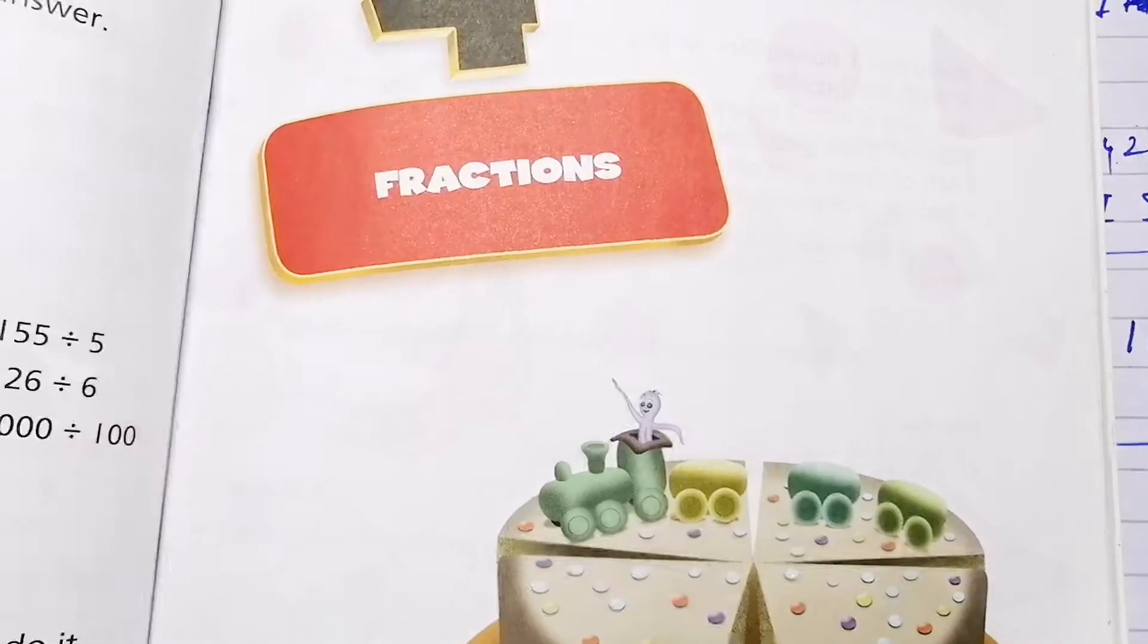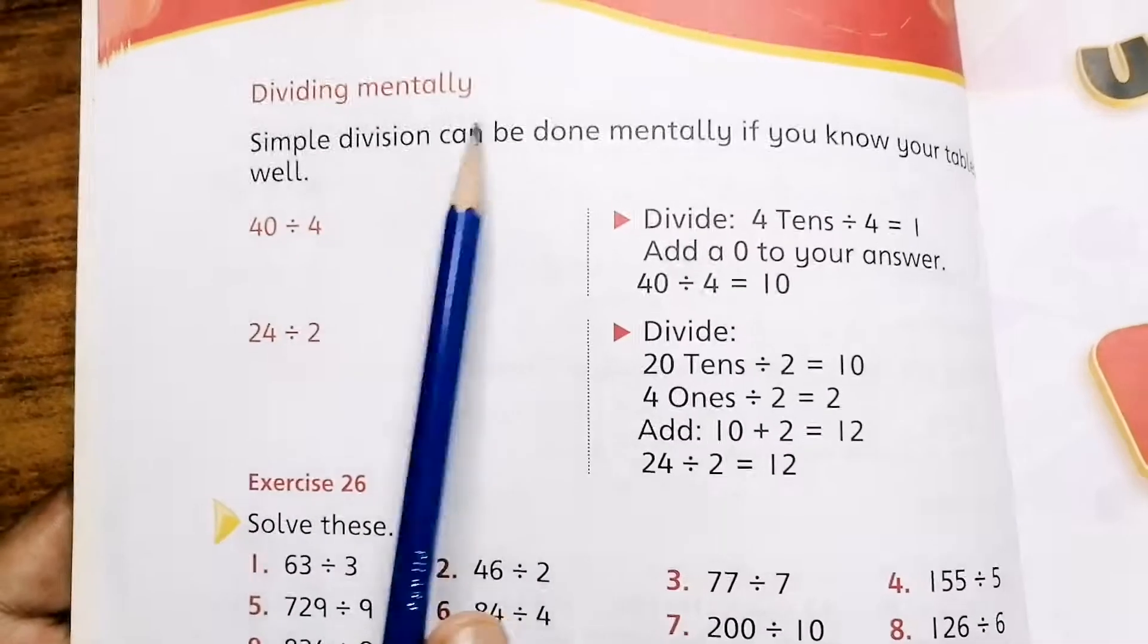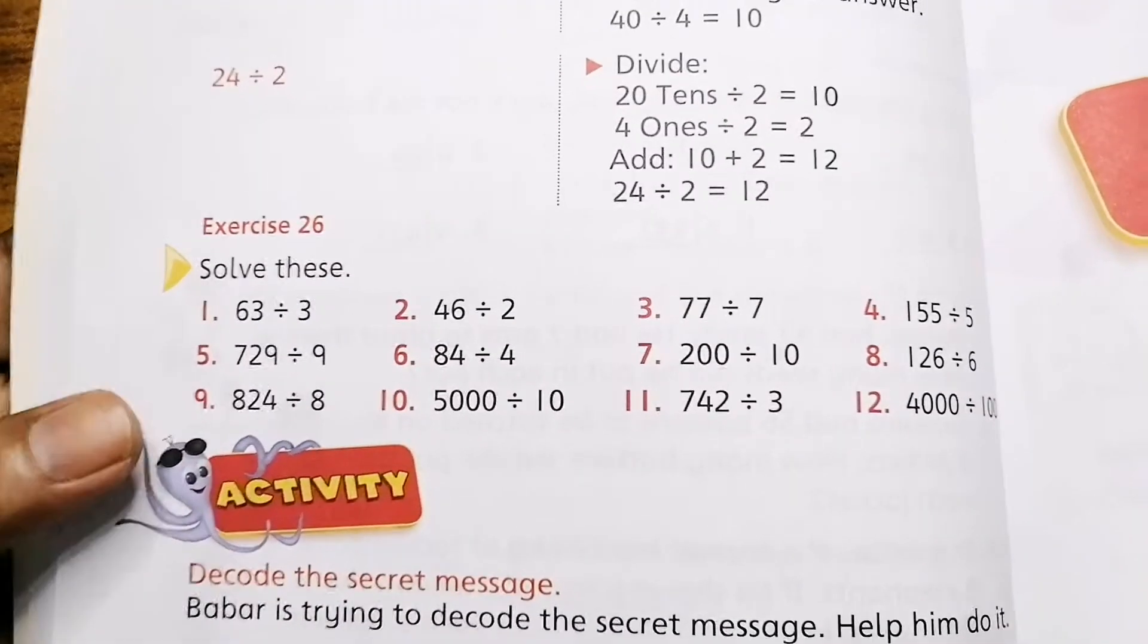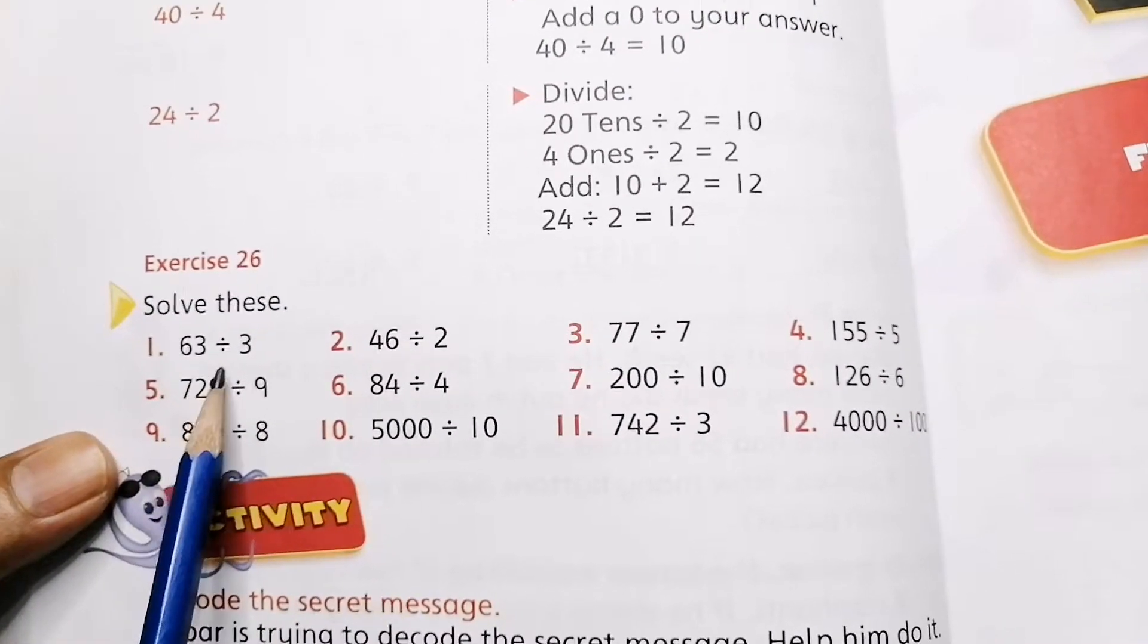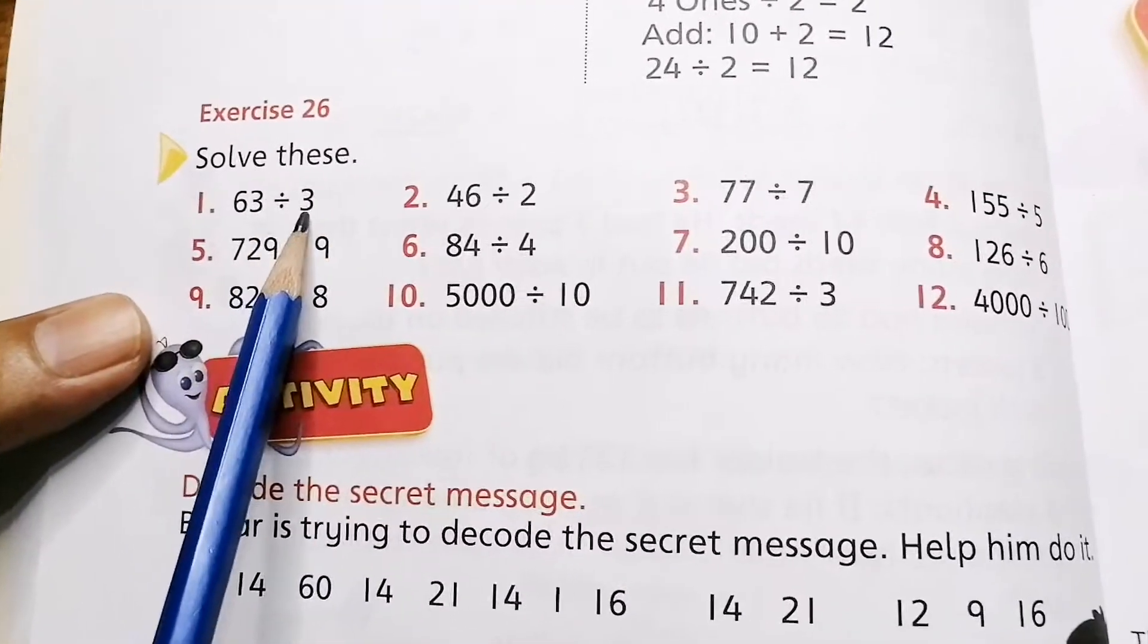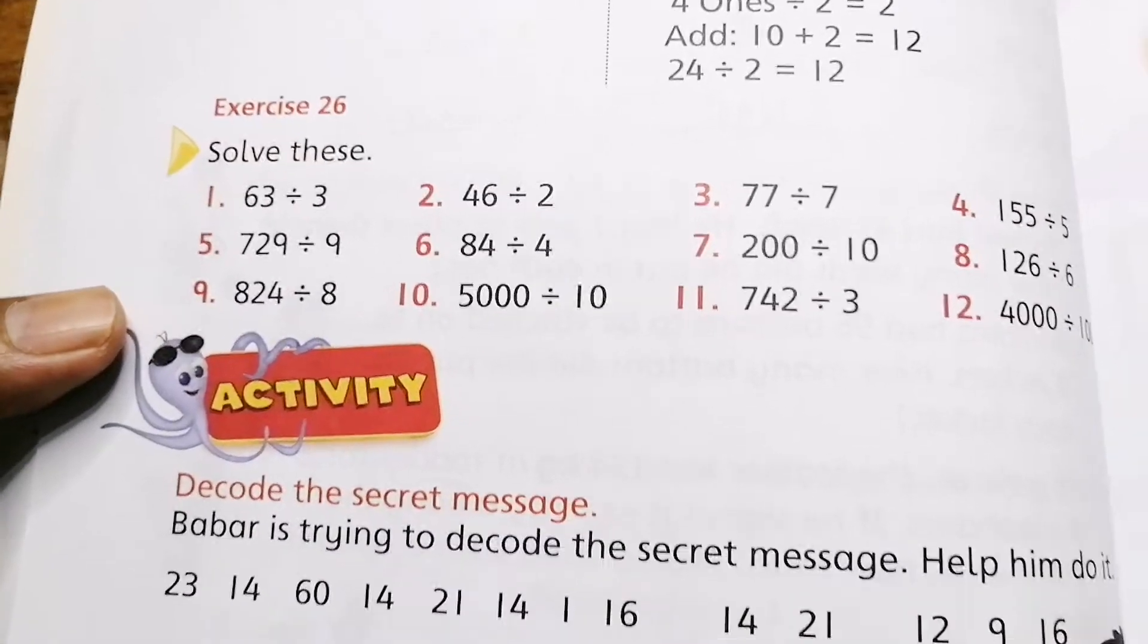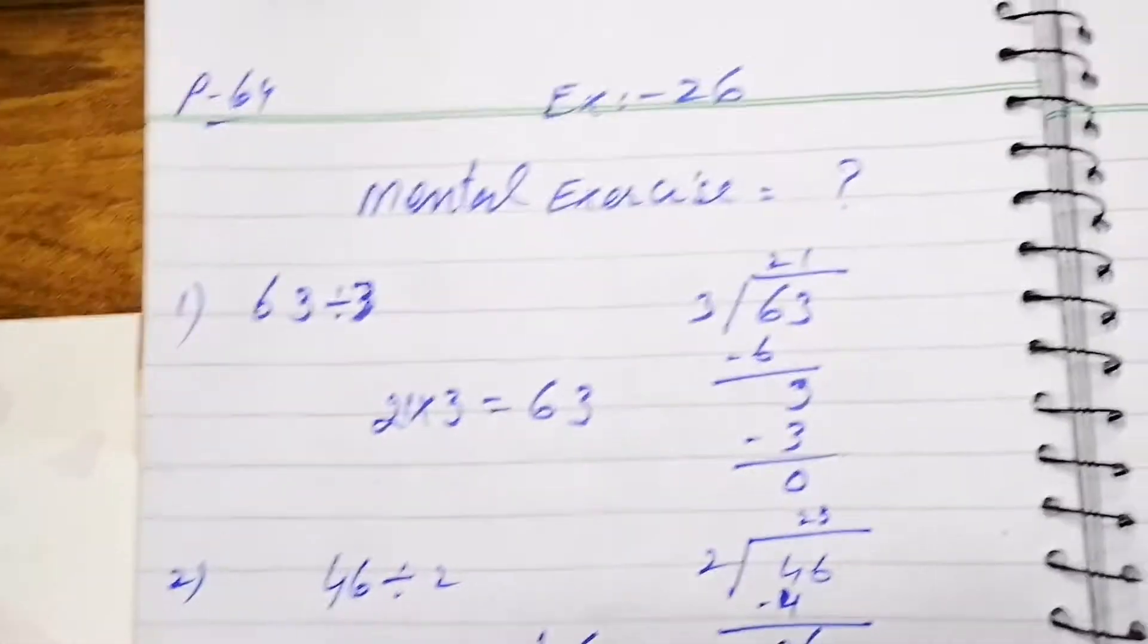Here is page number 64, dividing mentally. Mentally means that this is a mental exercise, no need to solve on the copy. You have to divide this in your mind, like how many times 63 is divided by 3. You must know tables, then you will be able to know. In your book, a very easy method has been given here.